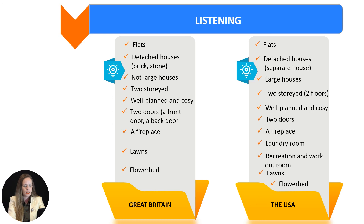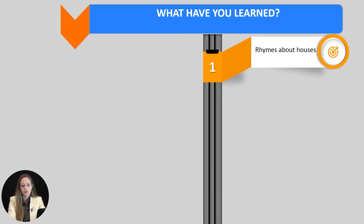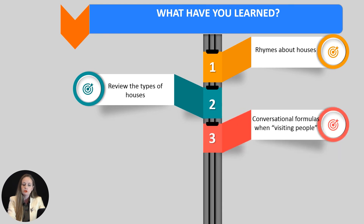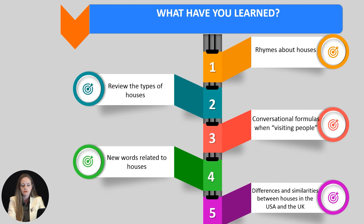Now I want you to reflect upon the proverb: every bird likes its nest. It's time to sum up what we have learned today. We have learned rhymes about houses, reviewed the types of houses, learned conversational formulas when visiting people, learned new words related to houses, and found out about differences and similarities between houses in the USA and the UK. See you next time — goodbye!